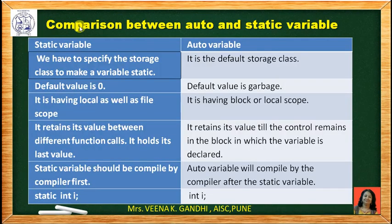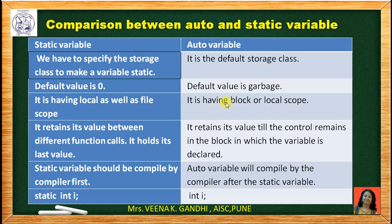Comparison between auto and static variables: for static, you must specify the keyword static; auto is the default and the keyword is optional. Default value of static is 0; default value of auto is garbage. Static variables can have local as well as file scope; auto variables have block or local scope only. Static variables retain their value between different function calls; auto variables retain their value only as long as control remains in the block. Static variables are compiled first by the compiler; auto variables are compiled after static variables. Declaration: static int i; and auto int i or simply int i.